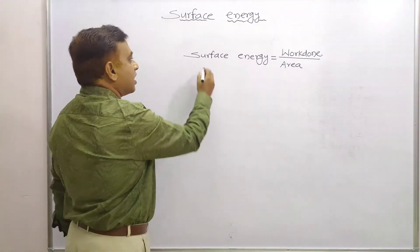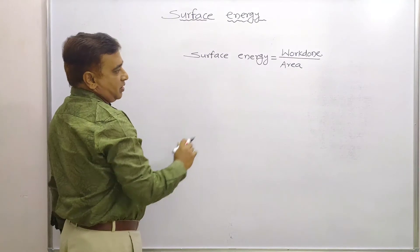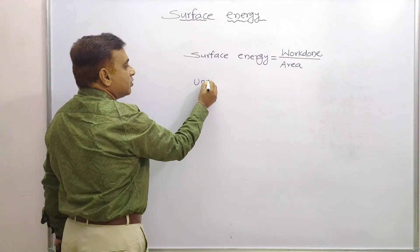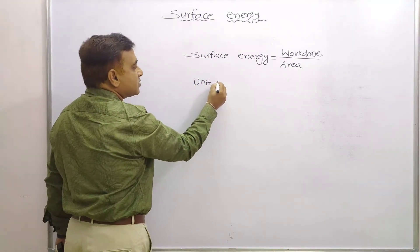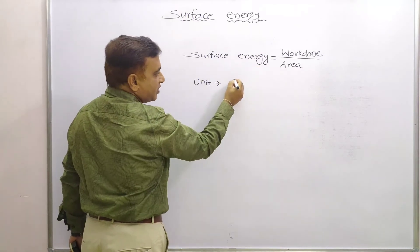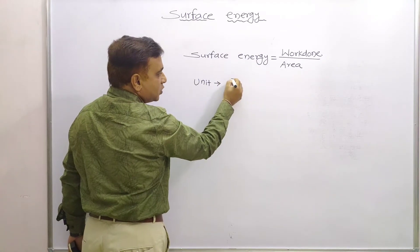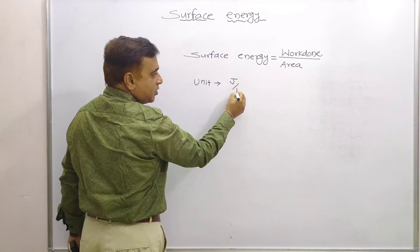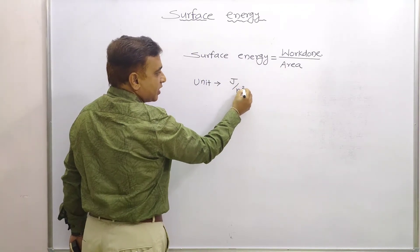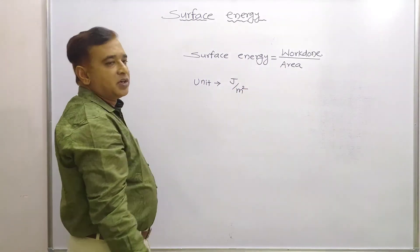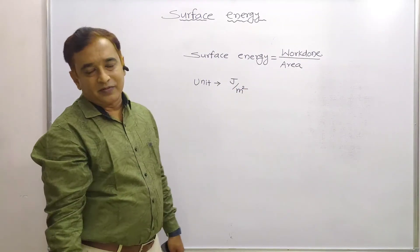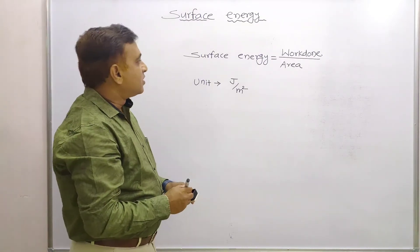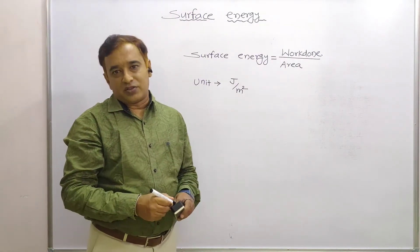Now, what about the unit of surface energy? The unit is straightforward: work has the unit joule and area has the unit meter squared, so the unit of surface energy is joule per meter squared.